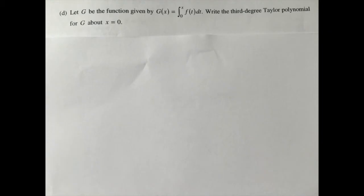Part D asks, let g be the function given by g of x, which equals the integral of f of t from 0 to x. Write the third degree Taylor polynomial for g about x equals 0.